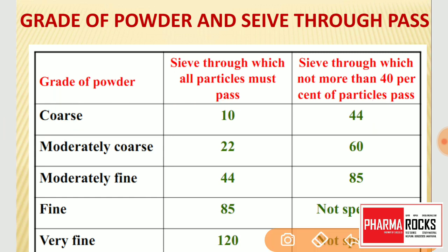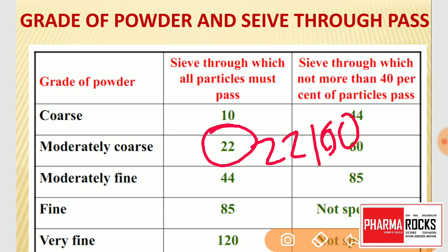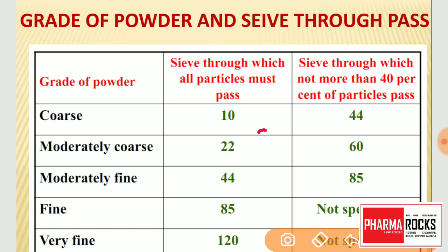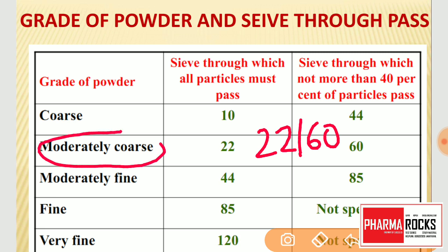Next is the grade 22 by 60, which is moderately coarse powder. In moderately coarse powder, all the particles must pass through sieve number 22, and not more than 40% pass through sieve number 60. So moderately coarse powder's grade is 22 by 60.